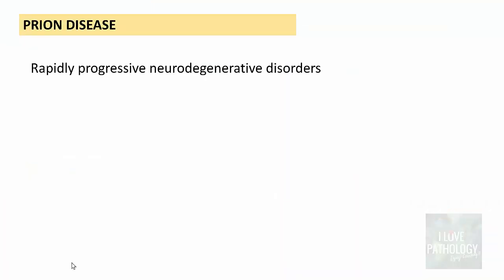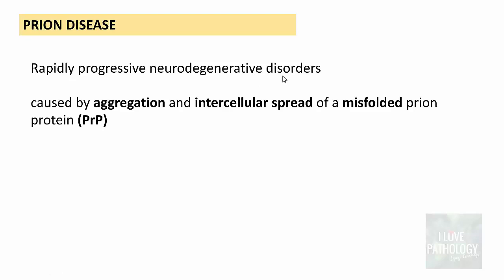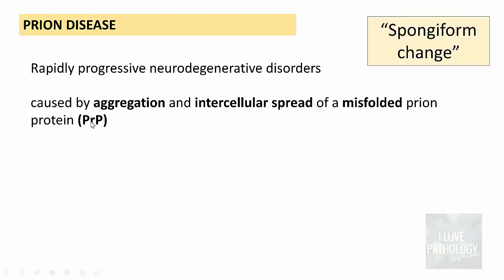Prion disease is clinically manifested as a rapidly progressive neurodegenerative disorder. It is caused by aggregation and intercellular spread of a misfolded protein, and this misfolded prion protein is referred to as PRP. The characteristic histological feature of prion disease is spongiform change — vacuolization of the neurons involved. Prion diseases are classified into sporadic, familial, or transmitted forms.